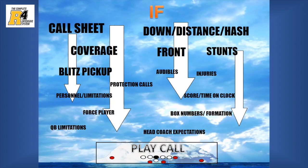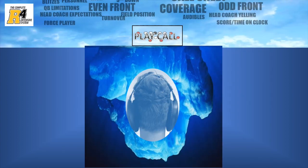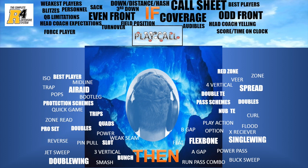The following slide represents the many different if-statements we as coaches have to process before calling a play: coverage, front, time, score, injuries, weather, head coach expectations — the list goes on and on. While these factors are many, they tend to pale in comparison to the "then" decisions we have to make on the play we actually call. As we look below the surface of the waterline, we are actually entering into the coach's mind, which contains all of the possibilities of plays and schemes we can call on a given down. This scheme information is referred to as explicit information.